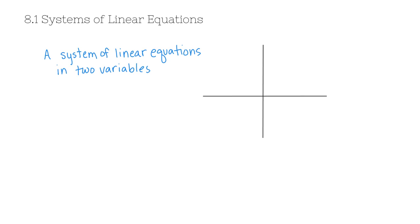In this video we're going to learn about systems of linear equations. A system of linear equations in two variables consists of two equations. To do this generically, our first equation is ax plus by equals c. This is a linear equation because the variables x and y don't have squares. It's written in standard form — not slope-intercept form — but you could solve for y to get it that way. When you graph this equation it looks like a line.